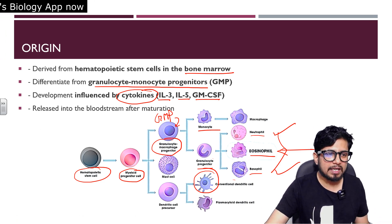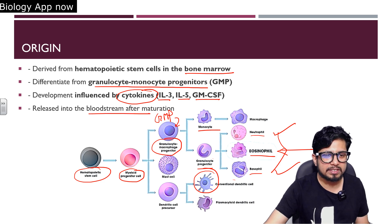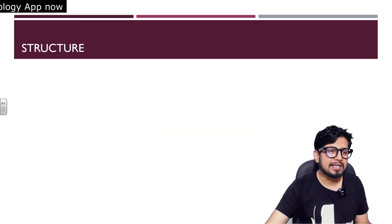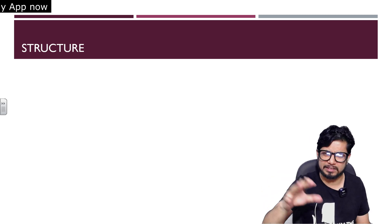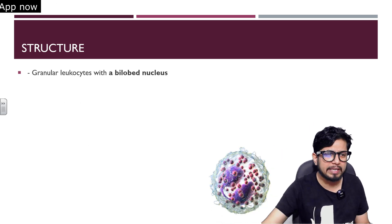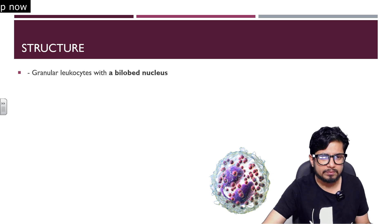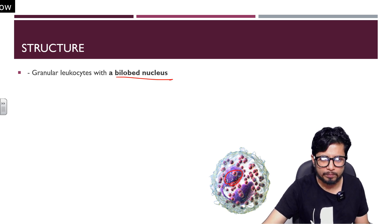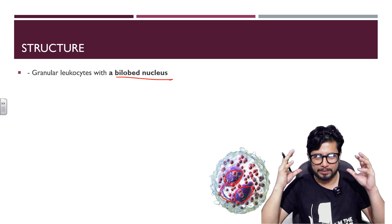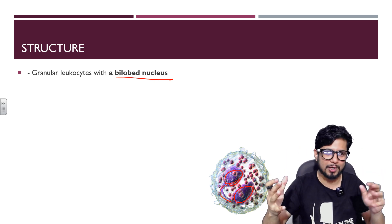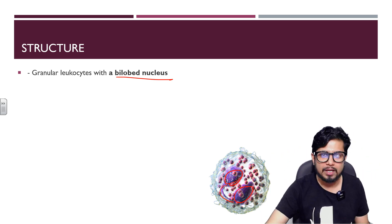Eosinophils are released into the bloodstream after maturation is done. The structure of eosinophil is very prominent. It is a granular leukocyte with a bilobed nucleus — you can clearly see lobe number one and lobe number two, connected by a small nuclear structure. So it's bilobed and looks like a headphone. The nucleus of eosinophil looks like a headphone.